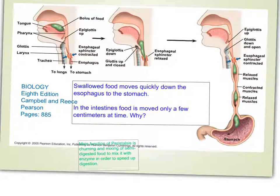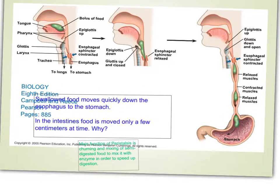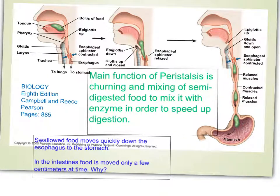During the process of peristalsis, swallowed food moves very quickly in the esophagus, while at the same time it moves very slowly — even a few centimetres at a time — in the small intestine. We need to discuss what would be the main reason why it moves so slowly in the small intestine. The main function of peristalsis is the churning and mixing of semi-digested food and to mix it with enzymes in order to speed up the process of digestion.